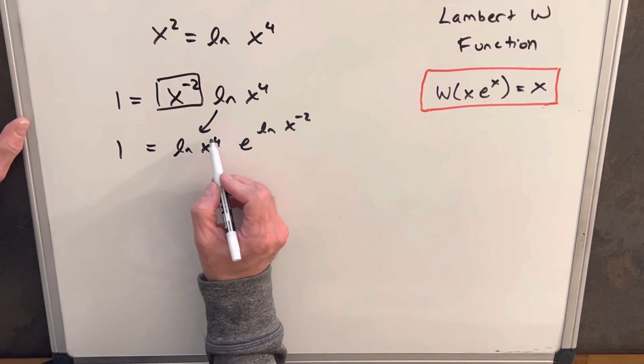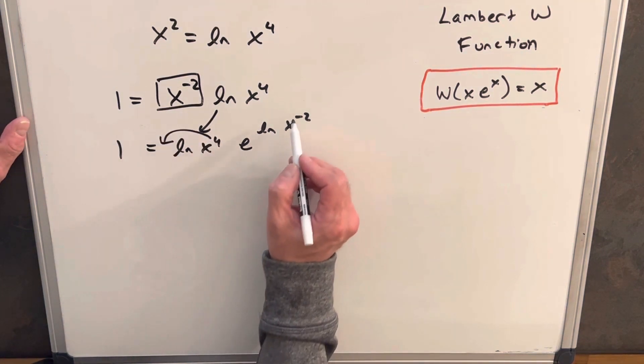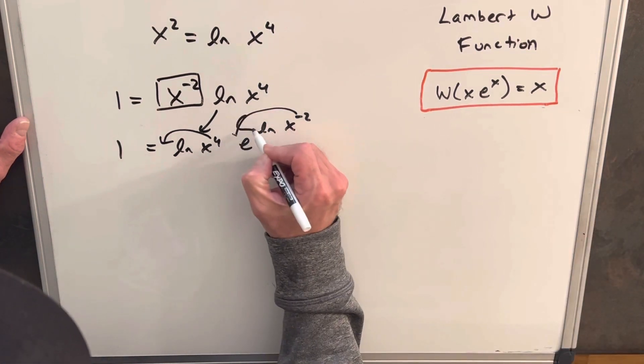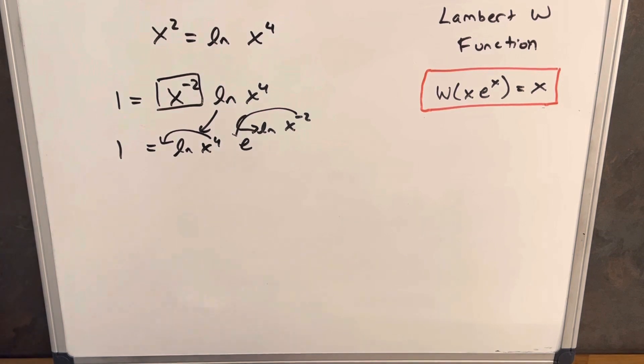And then we can just, by our property of natural log, we can move this here, and this up. We can move it here.